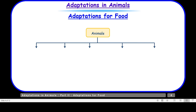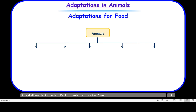Animals are divided into different categories according to their feeding habits. These are herbivores, carnivores, omnivores, and then we have scavengers and parasites.